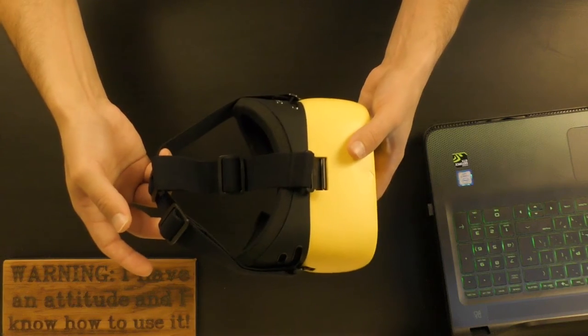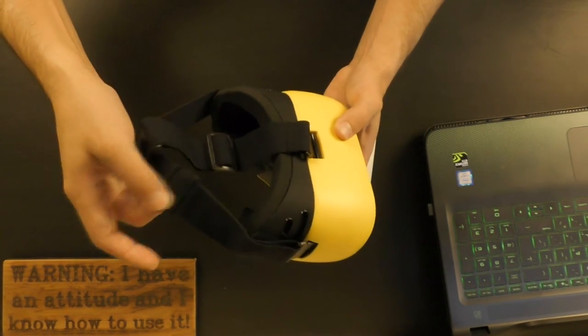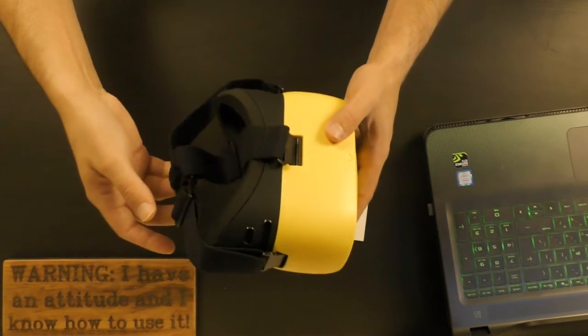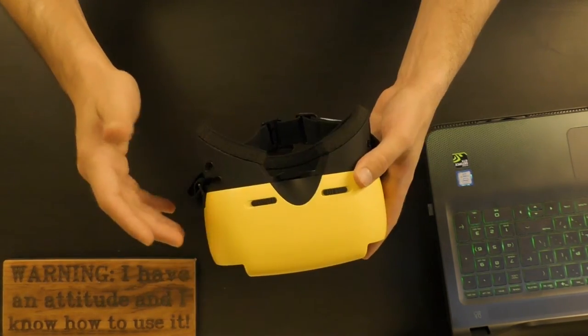As for the headband, you can see that it's a simple yet quite elastic strap. It's adjustable here, here, and here, and it's attached to the VR glasses in three different places.